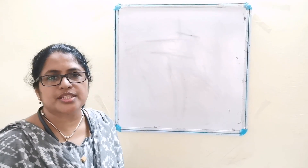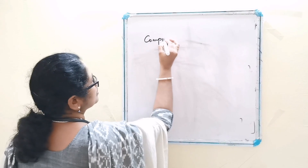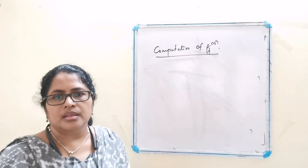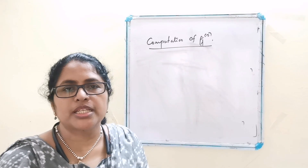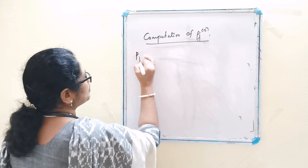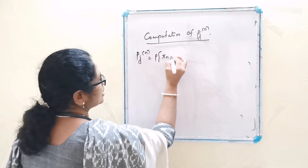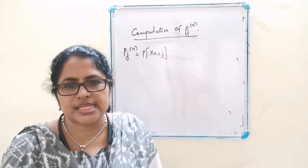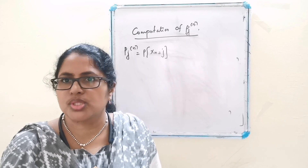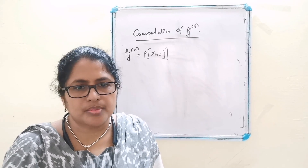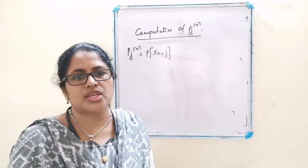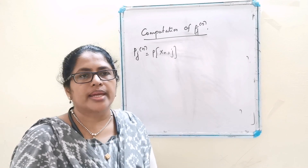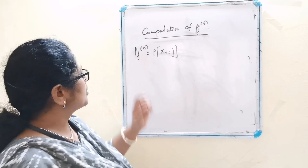Now let's consider the computation of Pj(N). We have Pj(N) equal to the probability of X(N) equal to j. Here the system should start from one of the possible states and after N steps it should reach the state j. Hence the corresponding event can be split up into a number of mutually exclusive events.